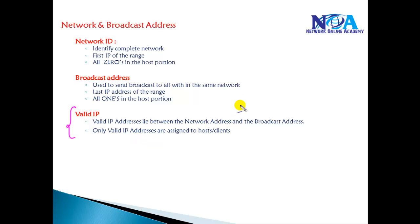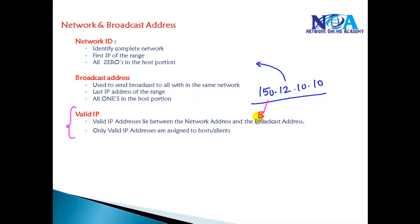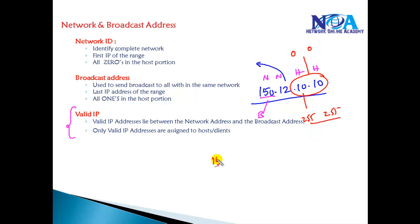Let's work through an example. For the address 150.12.10.10 — first identify the class. 150 falls in the Class B range, so there are two network portions and two host portions. To find the network ID, replace the host portion with zeros: 150.12.0.0. For the broadcast ID, replace the host portion with all ones (255): 150.12.255.255. These two addresses cannot be assigned to any device; all addresses in between are valid.